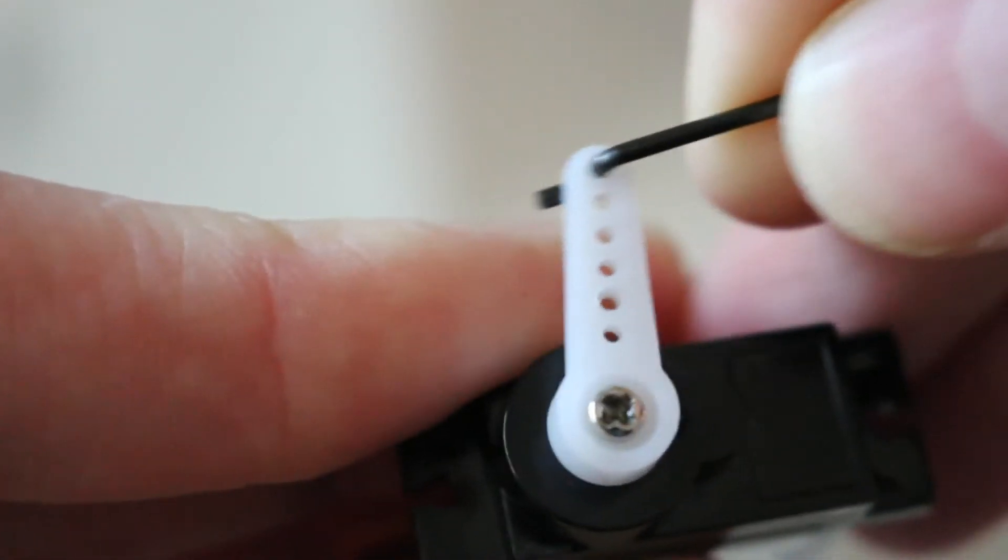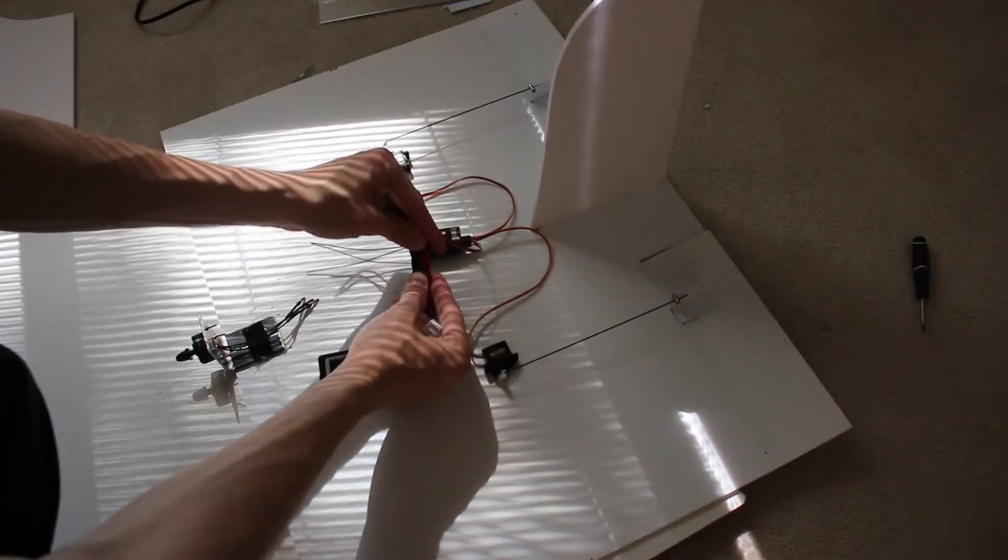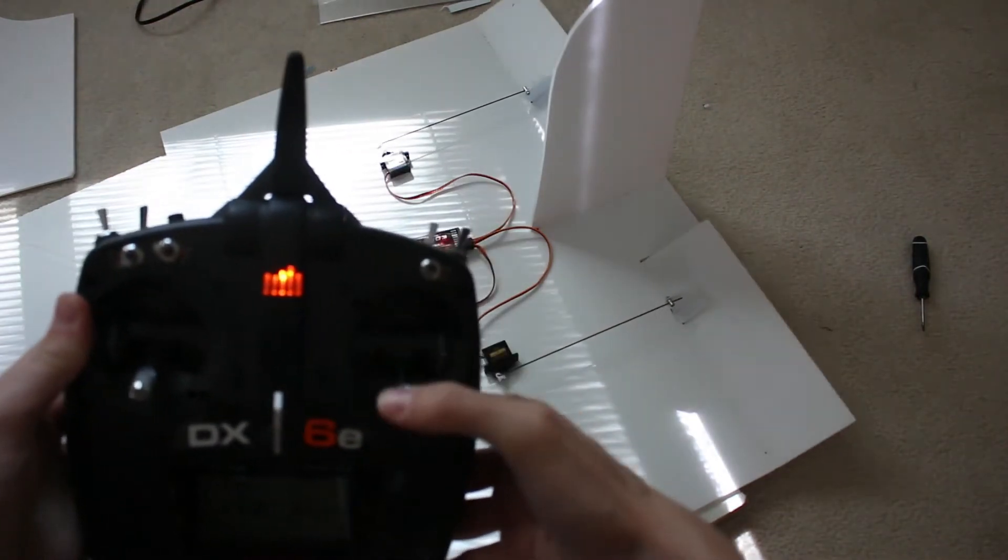Then, I took a servo and stuffed a push rod through it and glued that onto the flying poster. After everything was connected, I tested the control surfaces.